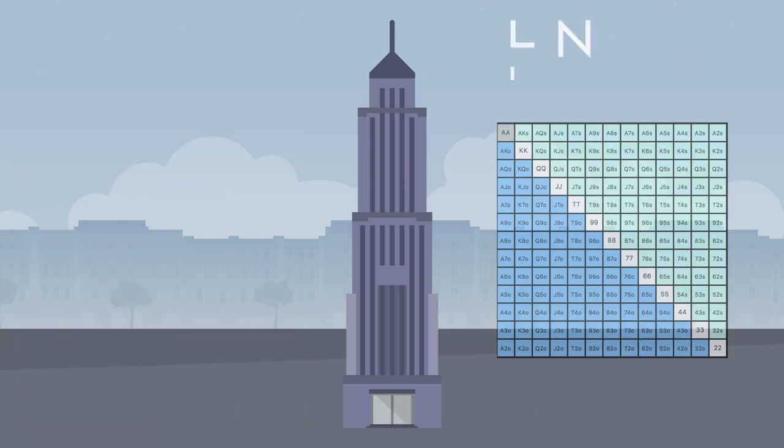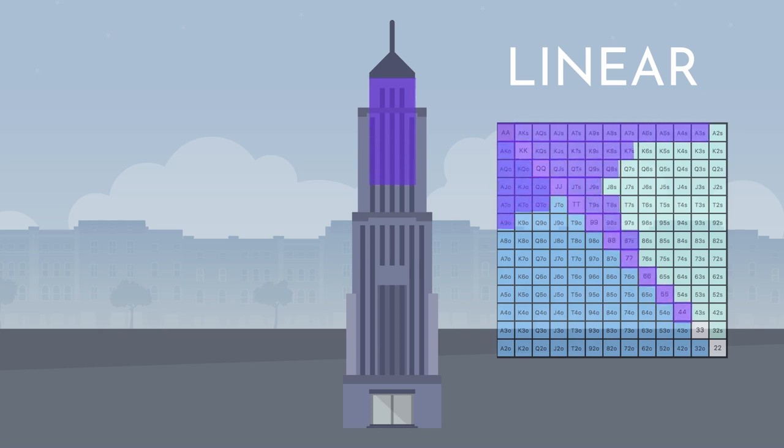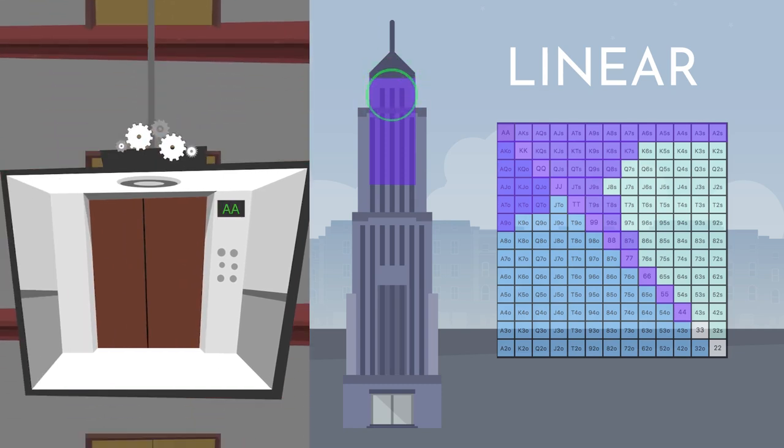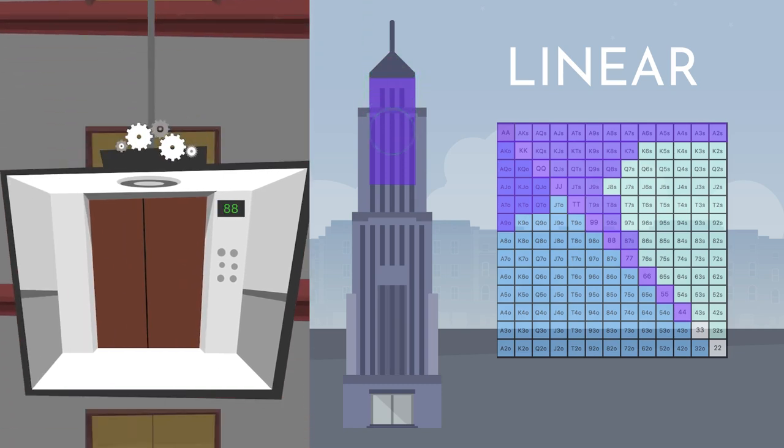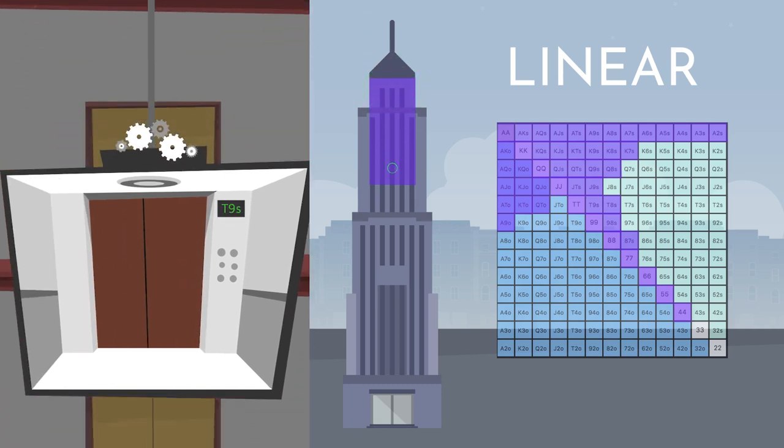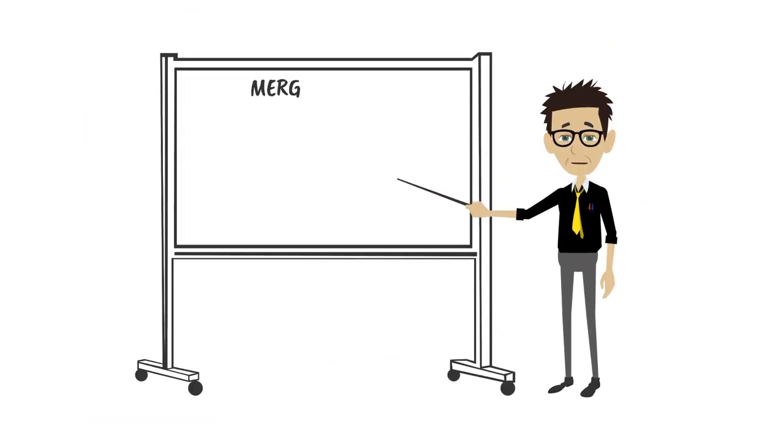Next we have the term 'linear.' This is probably the simplest descriptor that we work with. It relates to a range that starts at the top and works its way down until it stops at a specific point. We use 'linear' because it conveys moving from one hand to another in a straight line until the range is complete.